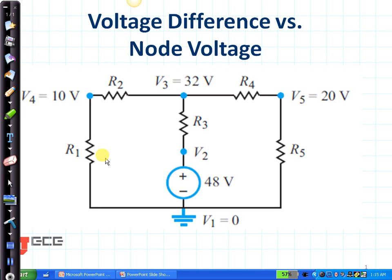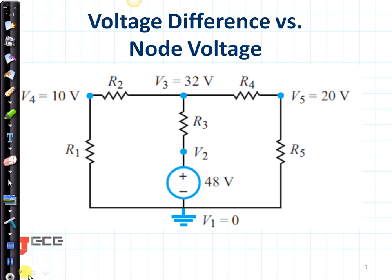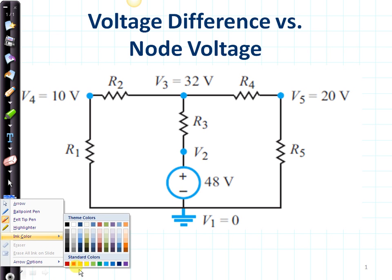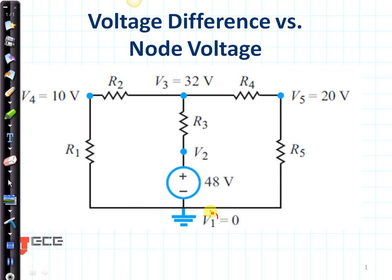Now I'd like to cover a very important topic: the difference between voltage difference and node voltage. In this problem, most of the node voltages have been measured. Let me show you what the node voltages are. V1 right here is the ground, so that's equal to zero. V2 is a node voltage that hasn't been measured. We can see that we have a ground right here, which is zero volts, and that applies to this whole region. Any place that I measure there is going to be V0, so that's node 1.